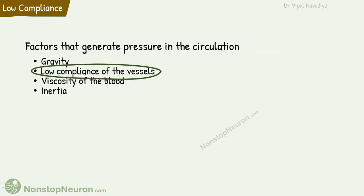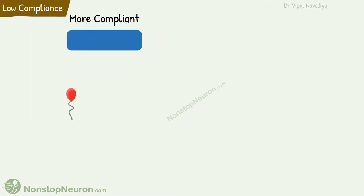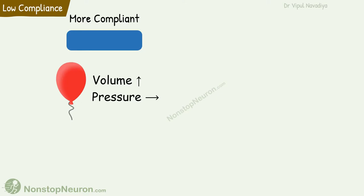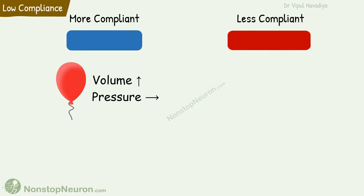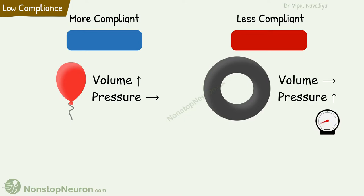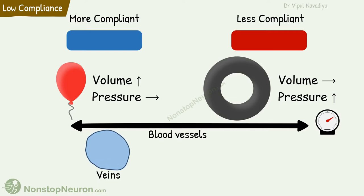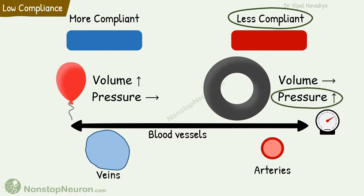Now, compliance of vessels. Compliance in simple words is the distensibility of a material. More compliant materials are more distensible, like balloons — as we fill air in a balloon, its volume increases and the pressure inside does not rise much. Less compliant materials, like a tire tube, do not distend much but the pressure rises more. Blood vessels range from being balloon-like with high compliance, such as veins, to tube-like with lower compliance, such as arteries. Low compliance of a vessel generates pressure when blood volume increases.